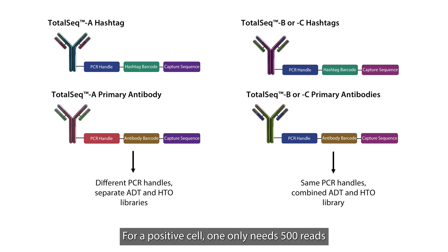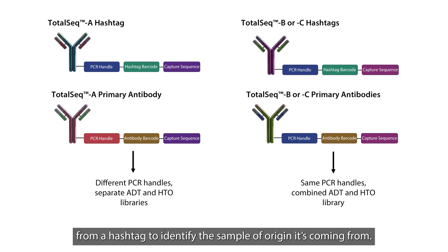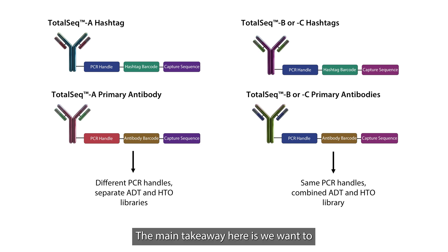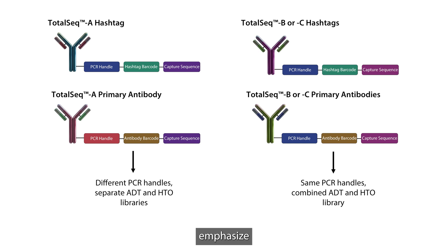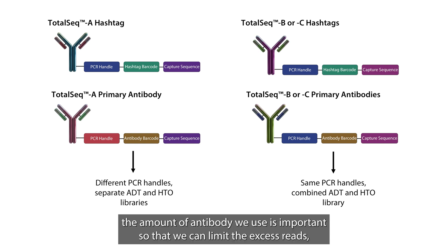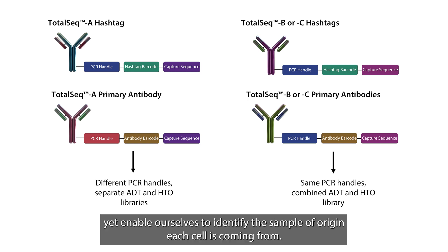For a positive cell, one only needs 500 reads from a hashtag to identify the sample of origin it's coming from. The main takeaway here is we want to emphasize that the amount of antibody we use is important so that we can limit the excess reads, yet enable ourselves to identify the sample of origin itself.